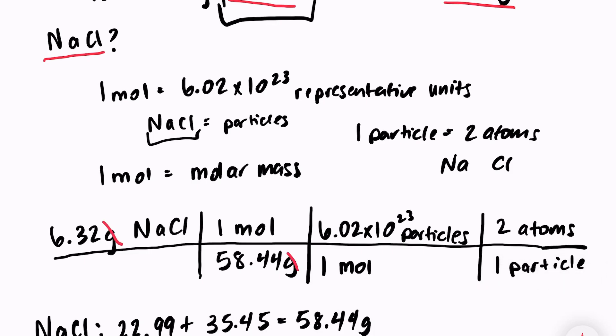I have grams on the top and the bottom, so those cancel. I have moles on the top and the bottom, and I have particles on the top and the bottom. And I'm left with a unit atom, which is exactly what I want.